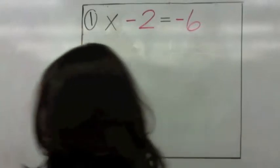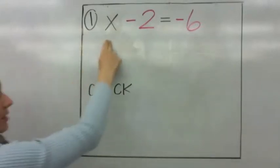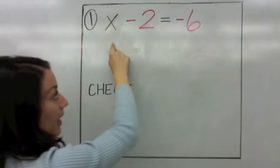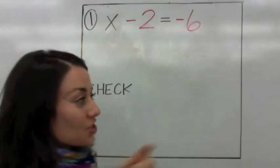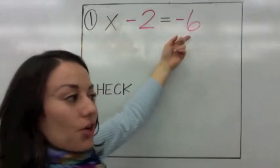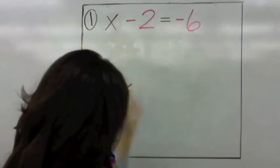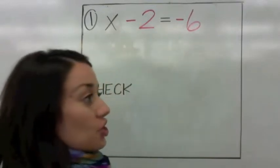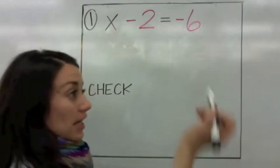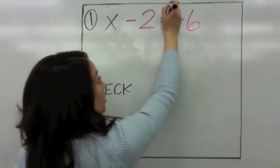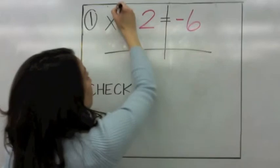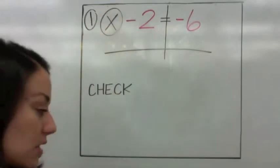Let's read equation number 1. It says x minus 2 equals negative 6. To start solving it, you always have to separate both sides by drawing a T. We're looking for x. Here's where we make our decision — what number is next to x?